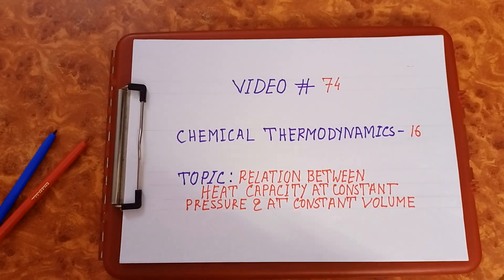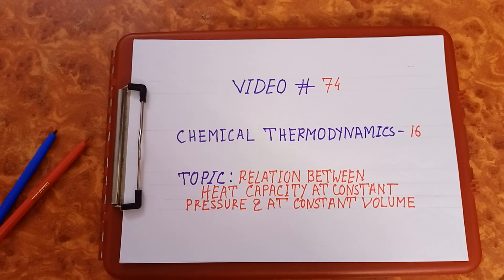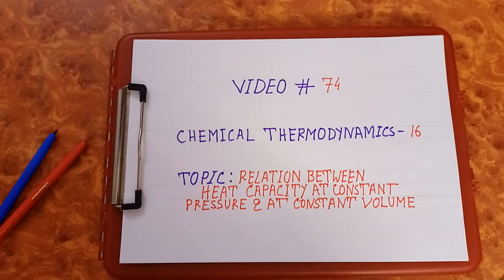Hello viewers, welcome to video number 74 of the channel ChemPhilic. Video number 74 is the 16th episode of Chemical Thermodynamics, and in this 16th episode the topic is the relation between heat capacity at constant pressure and heat capacity at constant volume.